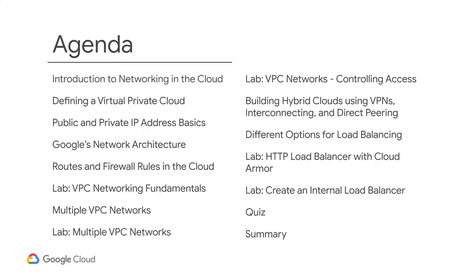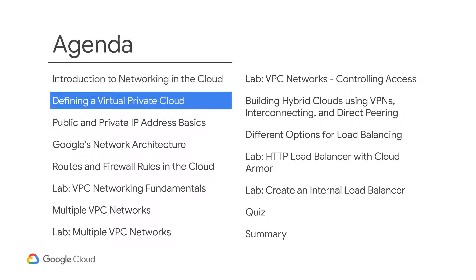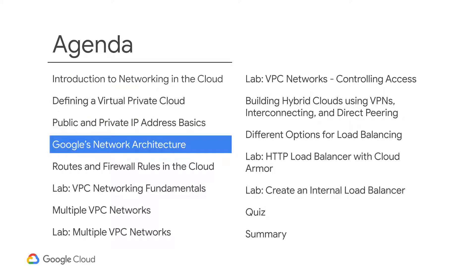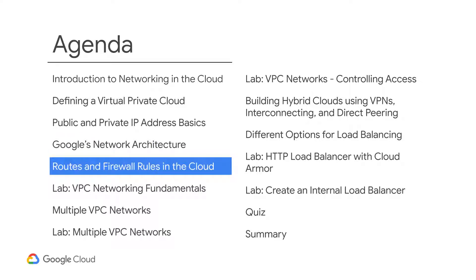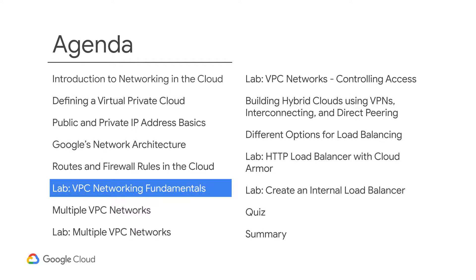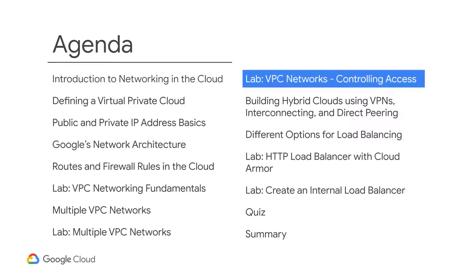These are the topics that make up the module. First, you'll be introduced to networking in the cloud. Then you will learn what a virtual cloud is, followed by an introduction to public and private IP addresses, and a review of Google's network architecture. You will then learn about routes and firewall rules in the cloud, before completing a hands-on lab to discover the fundamentals of VPC networking. The next topic will explore how multiple VPC networks can be used, supported by two labs — in the first, you will create VPC networks and VM instances, and in the other, you will create a web server and explore identity and access management roles and service accounts.